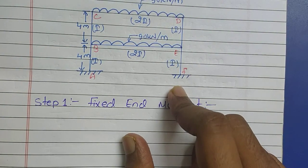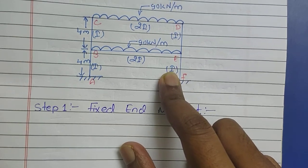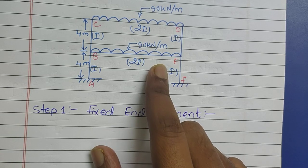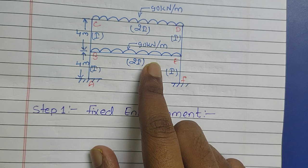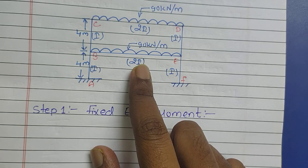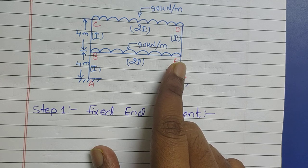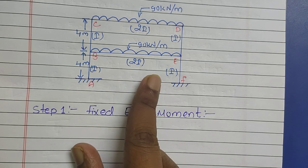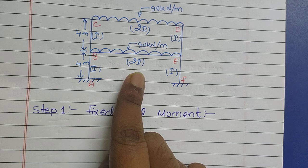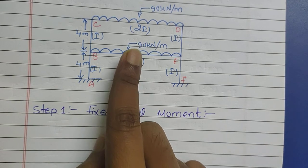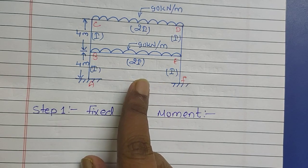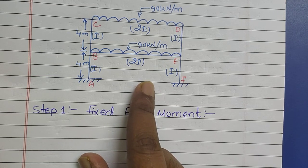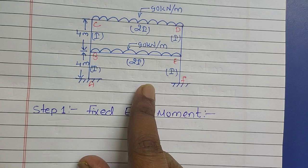Hello everyone, welcome to my YouTube channel Civil Learning. Today in this video I will be discussing Kani's method or rotation contribution method. This is going to be my third video on the same topic. Previously I added two videos based on Kani's rotation method — one about an unsymmetrically loaded portal frame and one about a beam. This is also a portal frame, but here we will be using the condition of symmetricity. I hope this video is helpful for all students studying structural analysis. Without wasting time, let's begin the solution.